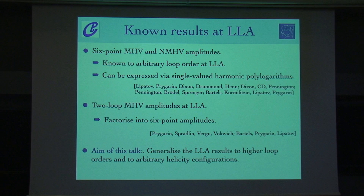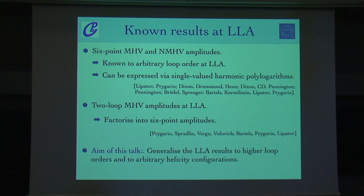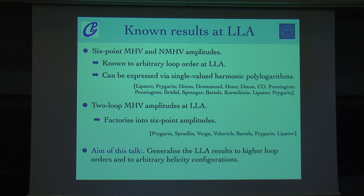We were not the first to do this limit. Six points is effectively completely known. People have observed that there's a class of functions that allows you to write down the answer at six points in this limit, which is a class of polylogarithms, and they are single-valued — the combination of polylogs with complex conjugates. People also looked at seven points, but that was restricted to two loops, starting from the symbol and then taking the limit.